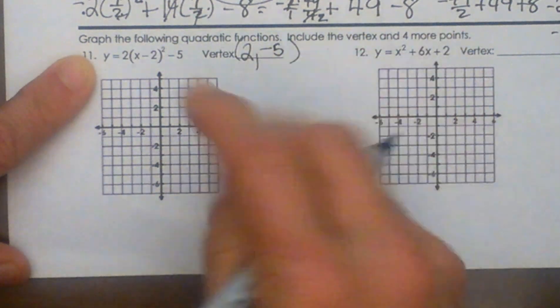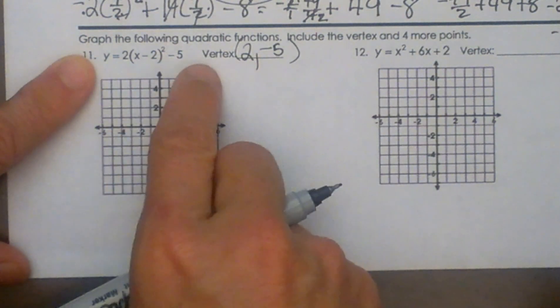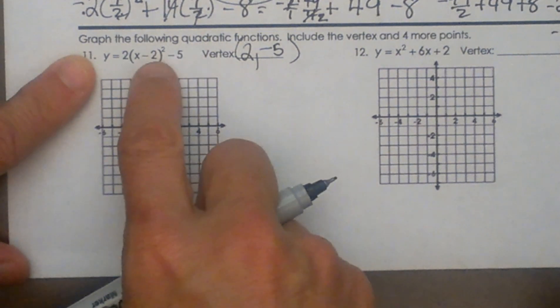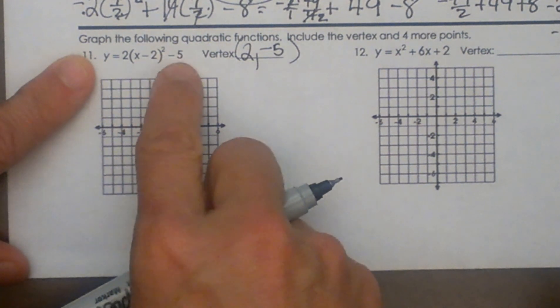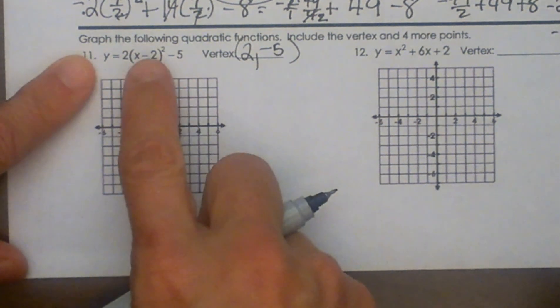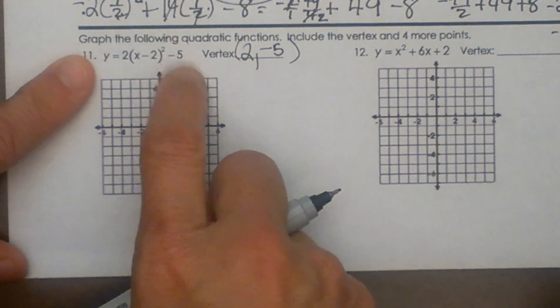So I've actually taught my students to sing the opposite of h but the same as k for the signs. So h is 2 and k is negative 5. Opposite sign of h but the same sign as k.